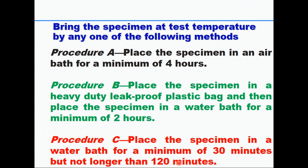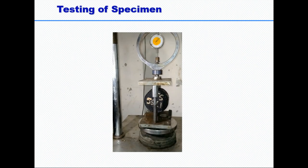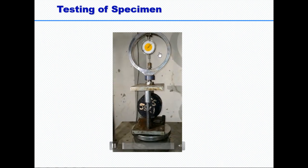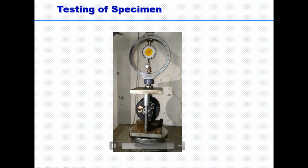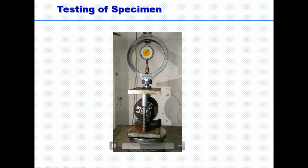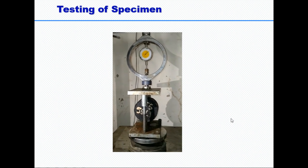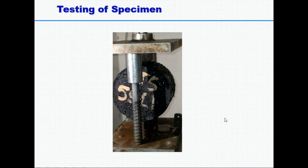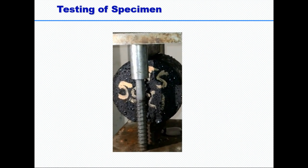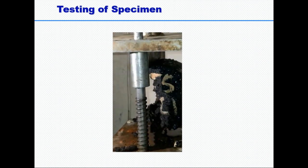The idea is to bring the entire specimen throughout its depth to a temperature of 25 degrees centigrade. After that, you test the specimen. For testing, we place the Marshall specimen between two strips in a Marshall test apparatus and apply a vertical load along the diameter. When this load is applied, the Marshall specimen splits into two parts along the diameter, which is why it is called the indirect tensile strength test.